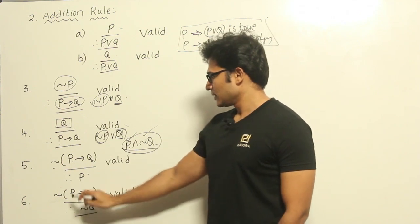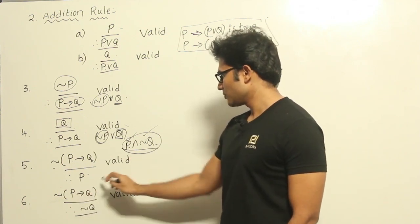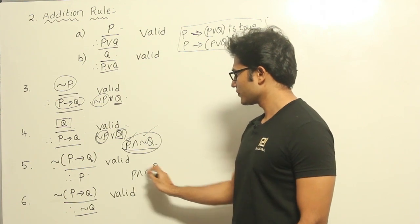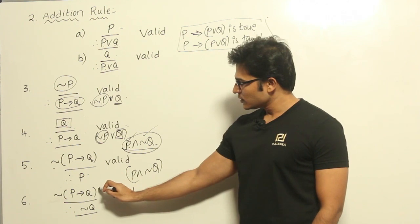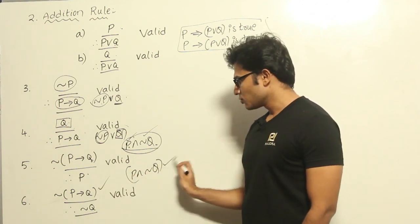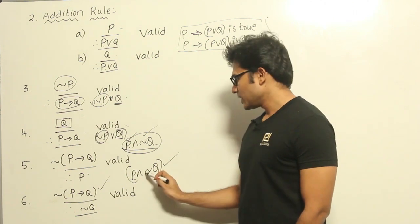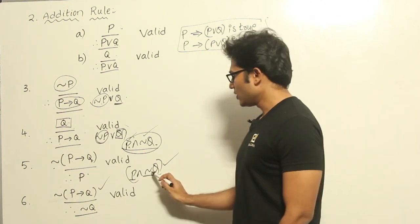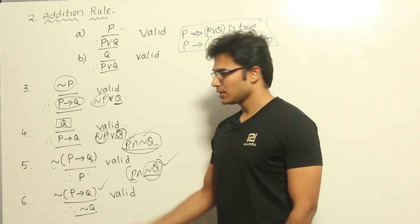The next one is similar: ¬(P→Q) can be written as P∧¬Q. Given that P∧¬Q is true, it is true only when both P is true and ¬Q is true. Therefore, saying that ¬Q is true is completely valid.